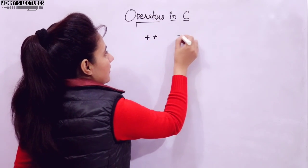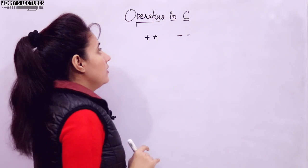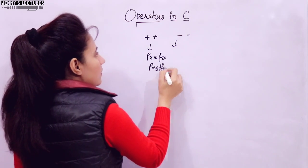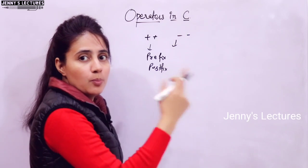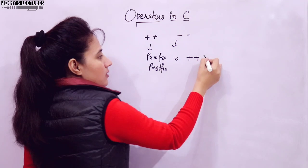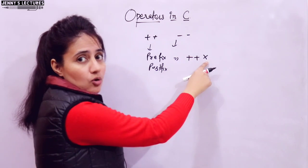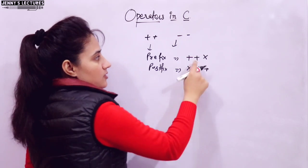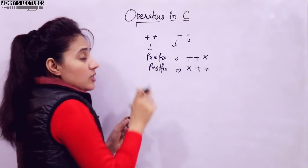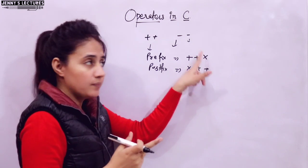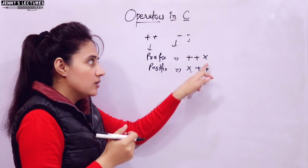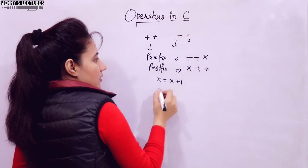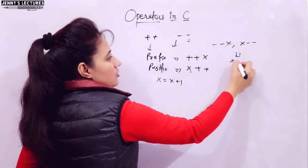Increment and decrement operators are unary operators. We can use them in two cases: prefix and postfix — pre-increment, post-increment, pre-decrement, and post-decrement. Pre means we write the operator before the operand; post means we write the operator after the operand. Plus-plus increases the operand value by 1; minus-minus decreases the operand value by 1. So ++x means x = x + 1, and --x or x-- means x = x - 1.